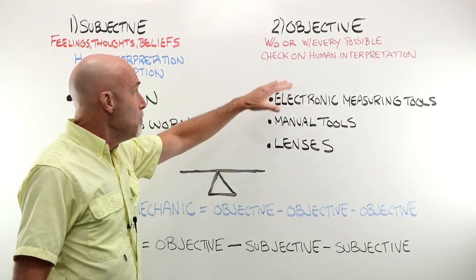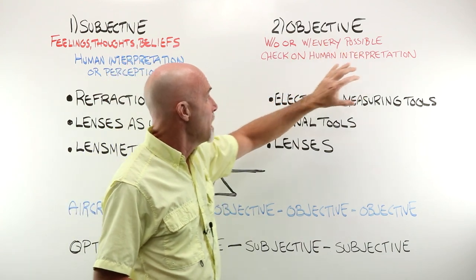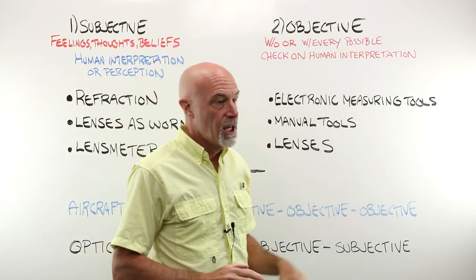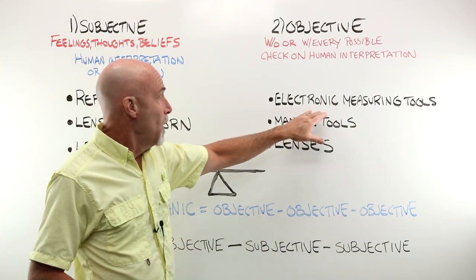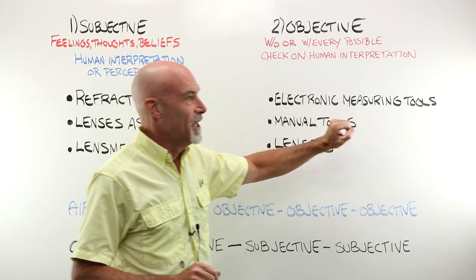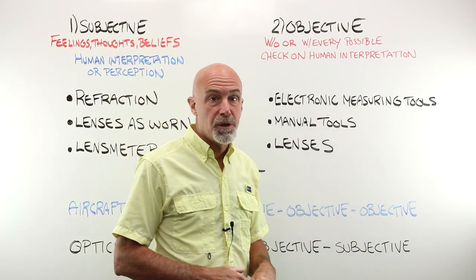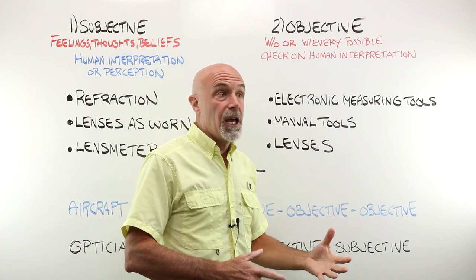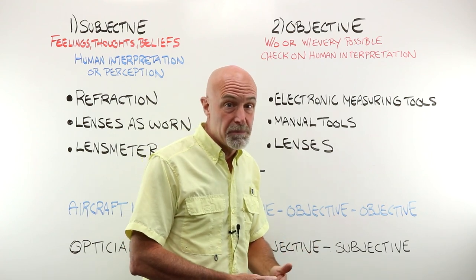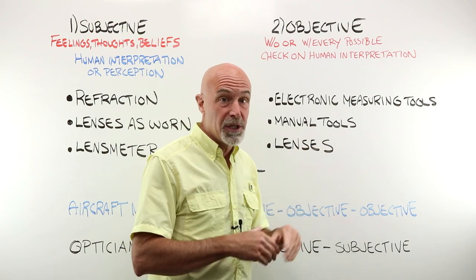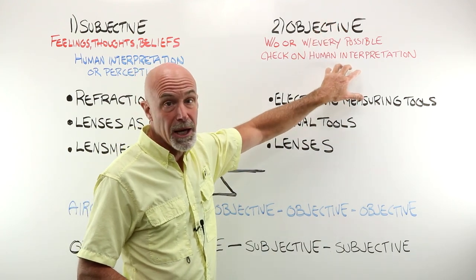Objective means that we have completely removed or done every possible thing to put a check on the human interpretation of a finding. Well-calibrated, well-maintained electronic measuring tools are objective measures. A properly maintained and well-calibrated auto lens meter, a dual lens mapper, an electronic measuring device. Those are objective. It takes out the human element.